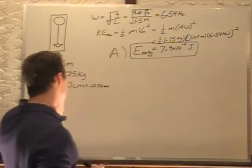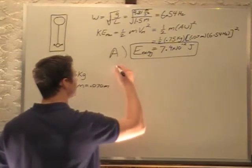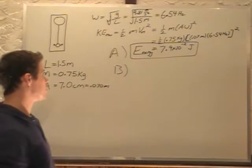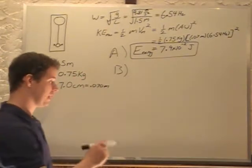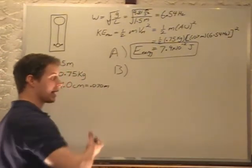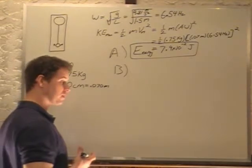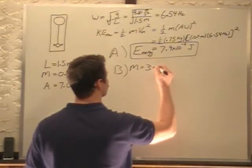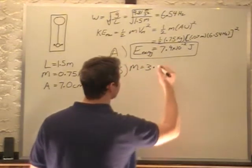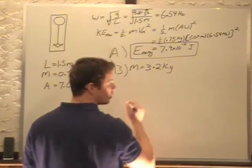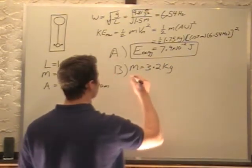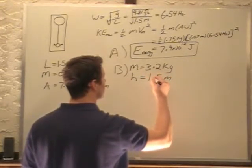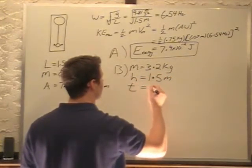Now part B asks if we have a weight to compensate for all the energy lost in that pendulum. A weight goes down over a time span of a week, and that puts energy back into the pendulum. So we're saying it takes a 3.2 kilogram mass, drops a distance of 1.5 meters over a time of one week.